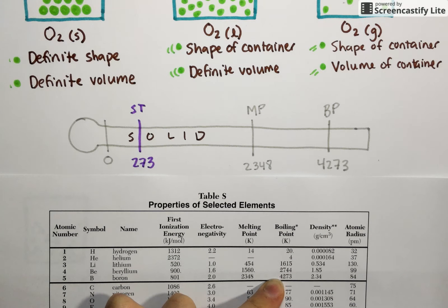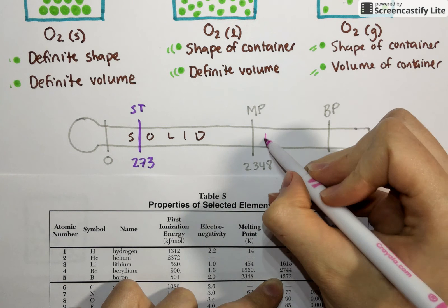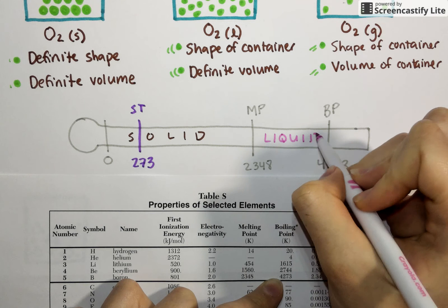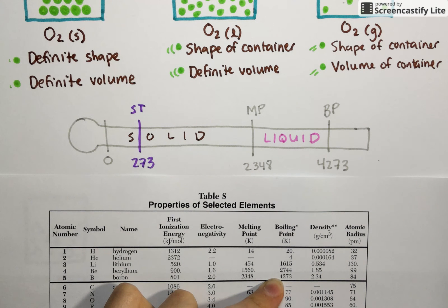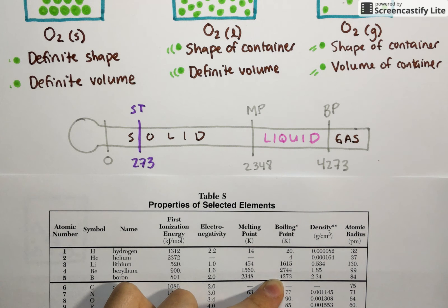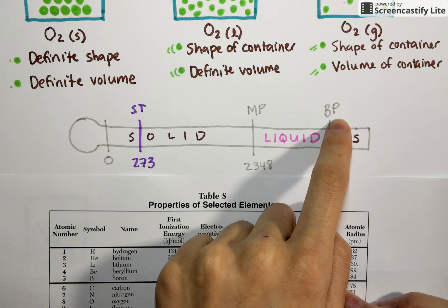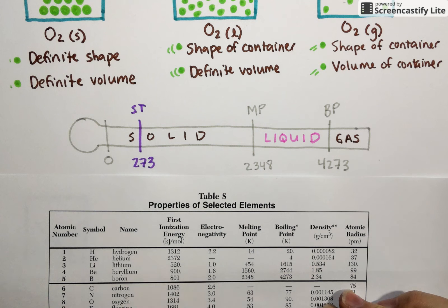However, if I'd asked what state of matter boron is at 3000 Kelvin, you'd notice that 3000 falls somewhere in between its melting and boiling point. So at that temperature, boron has melted into a liquid but not yet boiled, so it would exist in its liquid state. If we continue to raise the temperature to 5000 Kelvin, that falls well above boron's boiling point, which would mean it would exist as a gas.